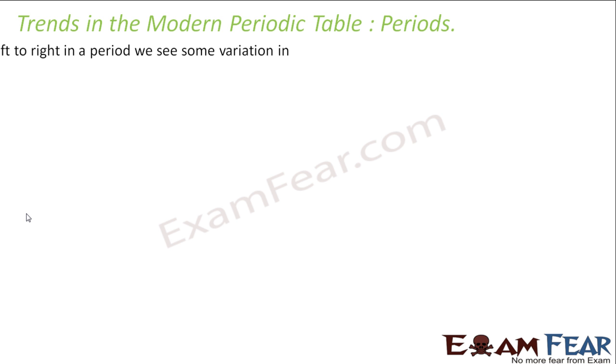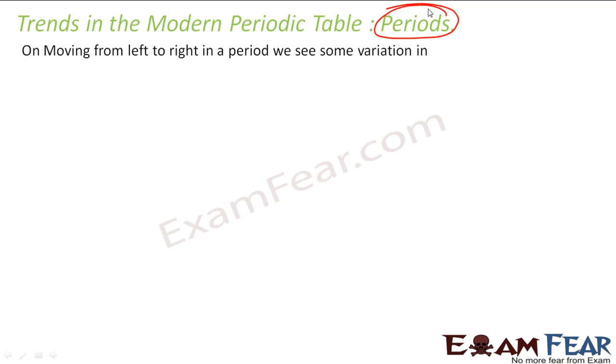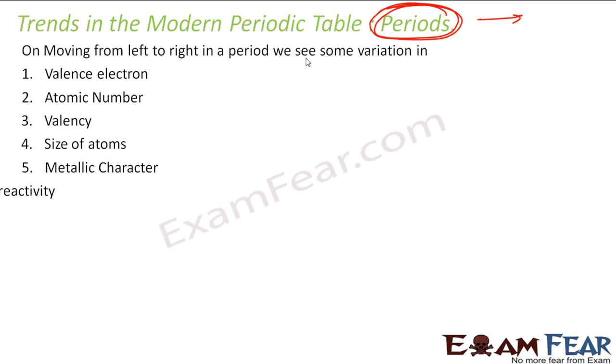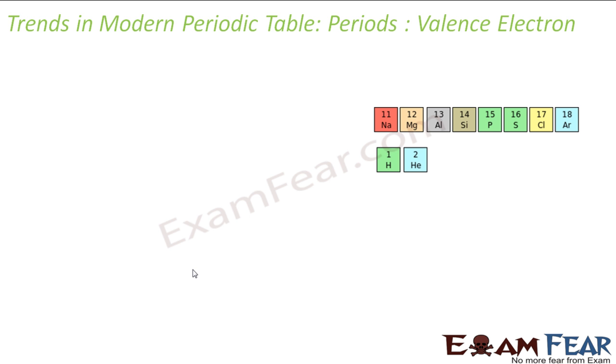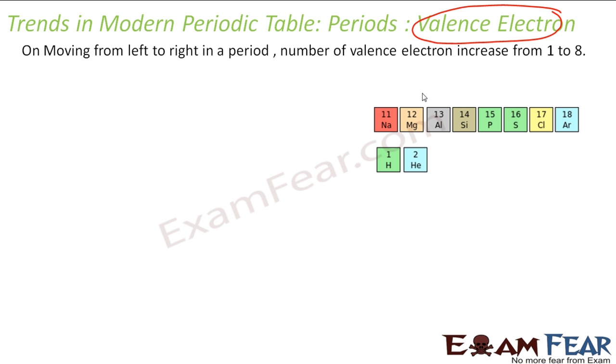So we'll study all these groups only. So when I'm talking about the properties and all, I'm talking about only these groups in this class at least. Now let's study some trends in the modern periodic table. If you move from left to right, I'm talking about the trends for the periods now, not for the groups. I'll take the groups later. So I'm trying to find the trends in the periods, so I have to move from left to right. We see some variation in valence electron, atomic number, valency, size of atoms, metallic characters, chemical reactivity. And we also see variations in nature of oxides. Then we move from left to right across the periods.